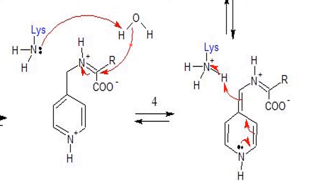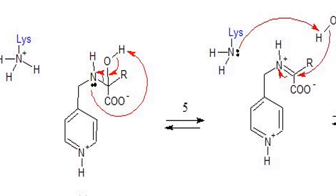Now we have the Schiff base again. The lone pairs of this nitrogen attack a water molecule in the active site and deprotonate it. The resulting hydroxyl attacks the imine Schiff base formed with the amino acid, kicking out one bond of the double bond, leaving a lone pair on the nitrogen. Now we have the hydroxyl attached to the alpha carbon of what was the amino acid.